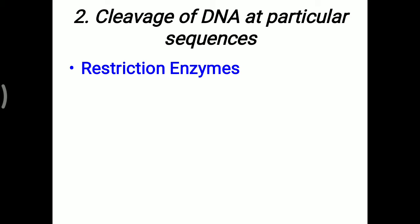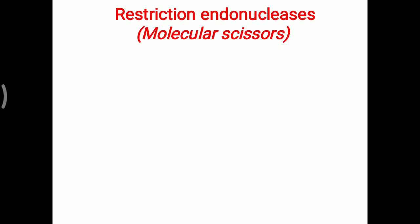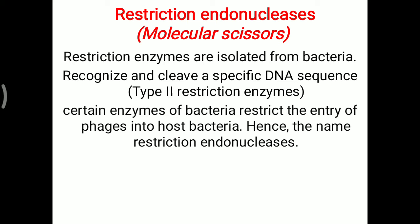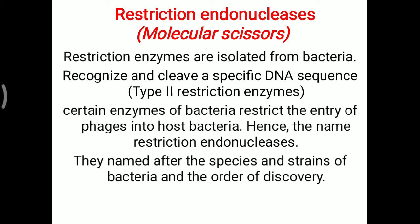Cleavage of DNA at a particular sequence is done by restriction enzymes. To insert the desired gene into a vector, restriction enzymes and ligase are needed. Restriction endonucleases — called molecular scissors — are isolated from bacteria; they recognize and cleave specific DNA sequences. The name 'restriction' comes from their role in restricting entry of phages into host bacteria. They are named after the species, strain of bacteria, and the order of their discovery.